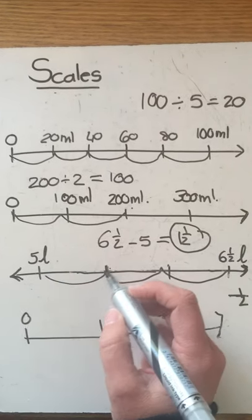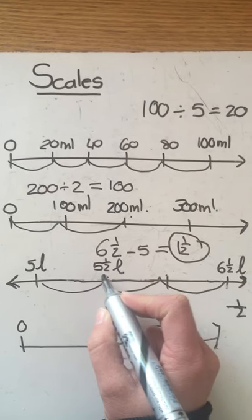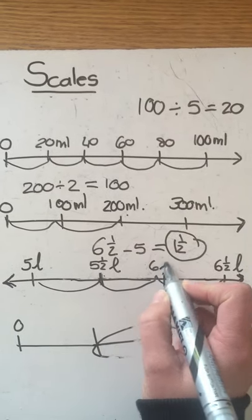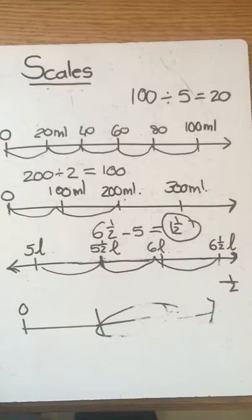So five liters plus a half is five and a half liters plus another half liter is six liters and then the next is six and a half and it goes on from there.